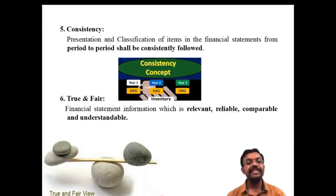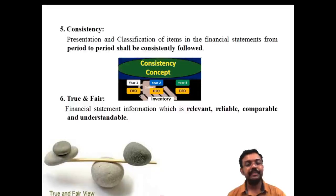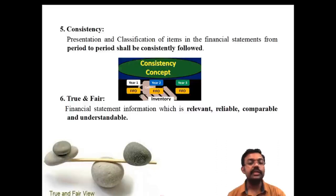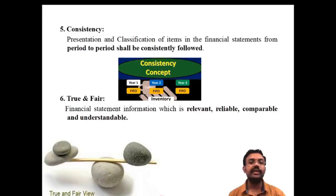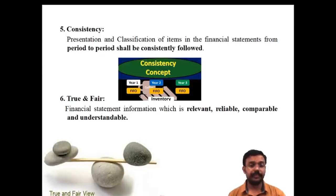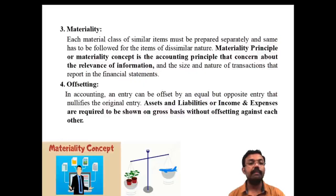The sixth concept is true and fair. As per the Companies Act, accounts must be prepared on a true and fair basis — that means the financial statements must be relevant, reliable, comparable, and understandable. This is known as the true and fair view. It is one of the important concepts relating to the final accounts of a company. Your balance sheet and profit and loss account must be prepared as per the true and fair requirements.